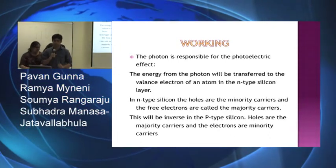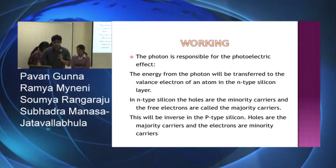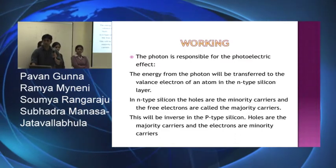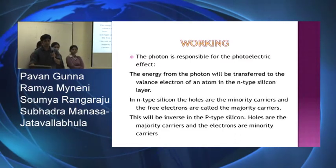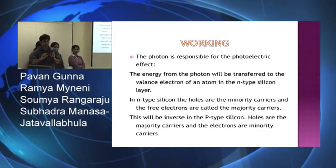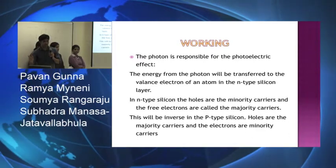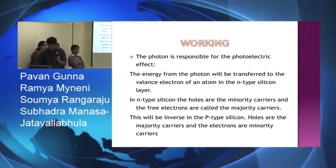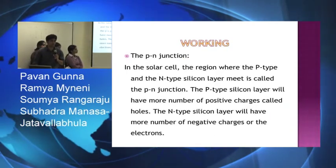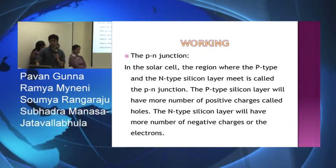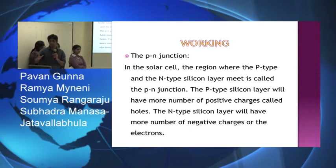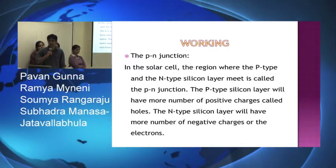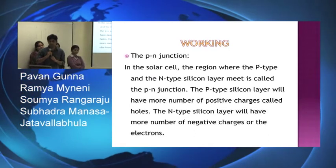Now I'm going to explain the working process of the solar cell. The photon is responsible for the photoelectric effect — when the photon interacts with an electron, it releases energy; that is known as the photoelectric effect. Regarding the p-n junction: there are two types — the p-junction, where the majority carriers are holes, and the n-junction, where the majority carriers are electrons.